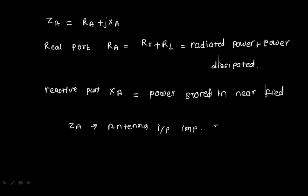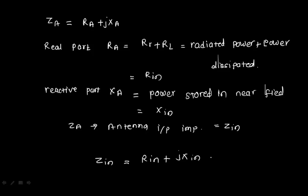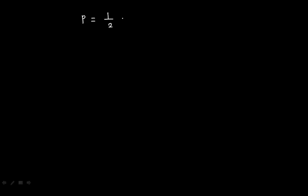Za equals Z_in, where Xa can be denoted as X_in (input reactance) and Ra as R_in (input resistance). So we write: Z_in = R_in + jX_in. Now, for the input power, using the formula P = I²R, the input power P_in equals one-half times R_in times I_in squared.